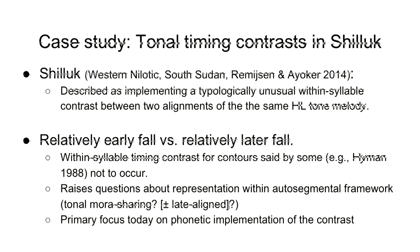Which brings us around to Schillick. Schillick is a Western Nilotic language spoken in South Sudan. It's described by Rameson and Ioker as realizing a typologically unusual contrast between two falling tones which are timed differently within the syllable that bears them — one being a relatively early fall and the other a relatively later fall. What Rameson and Ioker are interested in doing is demonstrating that this is in fact the case, and then discussing how we could represent such a timing contrast using some variant of auto-segmental metrical representation.